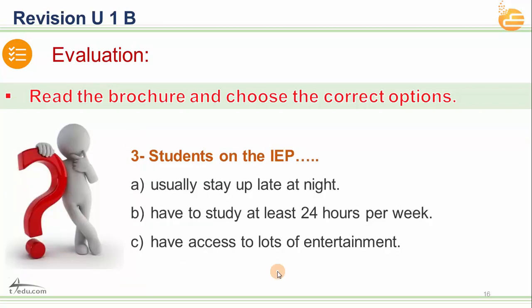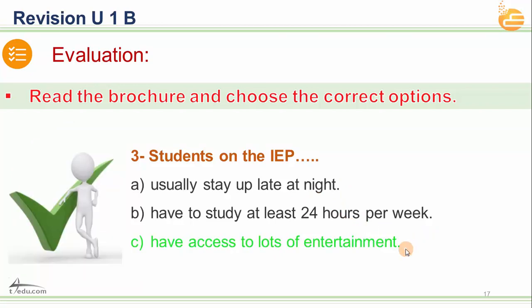Question three: Students on the IEP in Indiana University can usually do what? Option A: stay up late at night. Option B: study at least 24 hours per week. Option C: have access to lots of entertainment. The answer is C — it's not only about education; you can also have fun in various places according to the reading text.